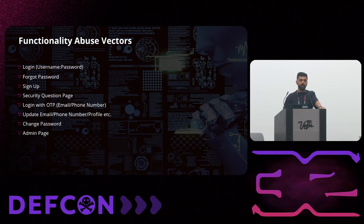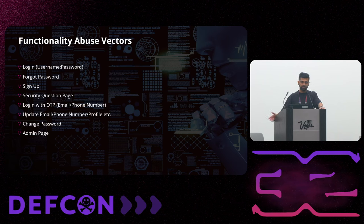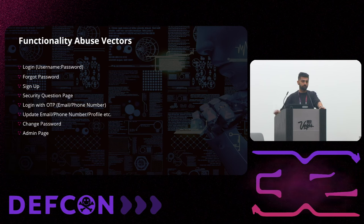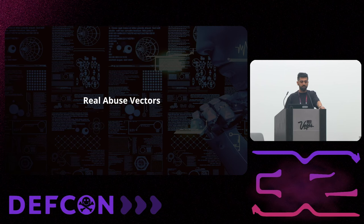Whenever we are hunting for authentication bypass and account takeovers, these are the abusable vectors or functionalities where you can focus on. I have identified issues in these features and functionalities, but this bug is not limited to these features only — you can explore. These are real-time abuse vectors: vulnerabilities and techniques which you can use to take over accounts and bypass authentications.